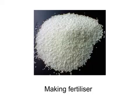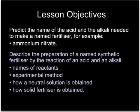This tutorial looks at how a fertiliser such as ammonium nitrate can be made in the school laboratory. Given the name of a fertiliser, you'll be expected to name the acid and the alkali that will be needed to make it. You'll also be expected to know the brief experimental details for making a solid fertiliser from this acid and alkali.